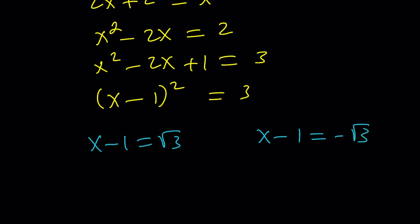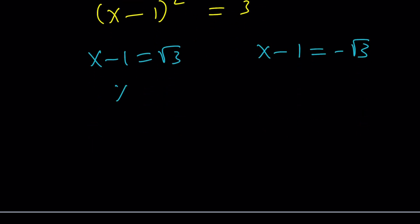And then this gives us x minus 1 squared equals 3. And there are 2 numbers whose square equals 3. Those numbers are root 3 and negative root 3.